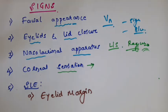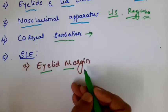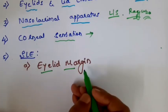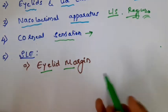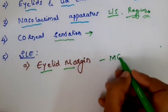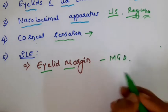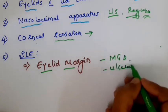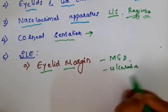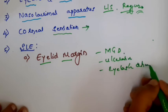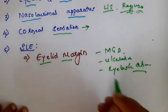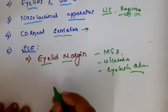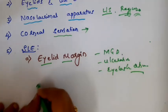After these signs, proceed to proper examination of the eye with torchlight or slit lamp. First examine the eyelid margin under the slit lamp - look for meibomian gland dysfunction, ulcerations at the lid margin, or eyelash abnormalities which are well appreciated under slit lamp examination.